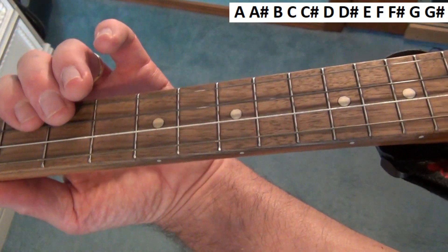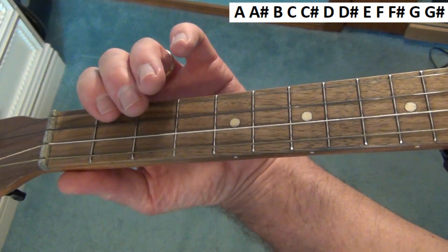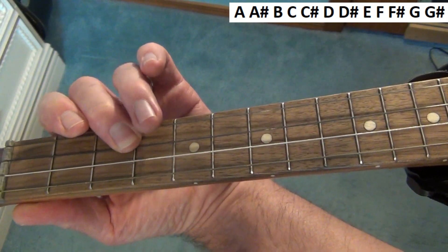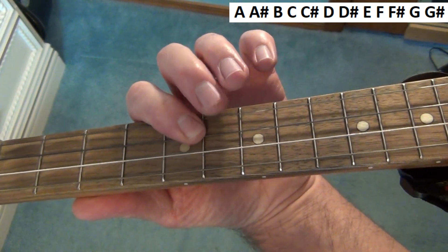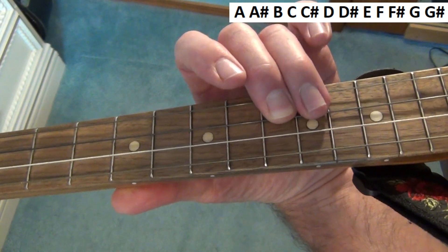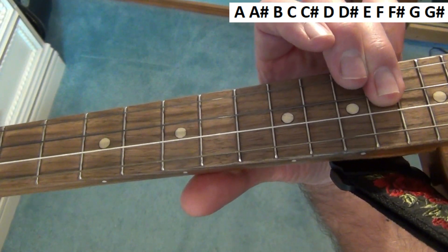So the half steps on the baritone ukulele or guitar are consecutive frets. So starting on the A, it'd be A, A-sharp, B, C, C-sharp, D, D-sharp, E, F, F-sharp, G, G-sharp, and then back to the A.